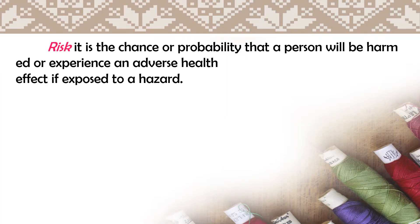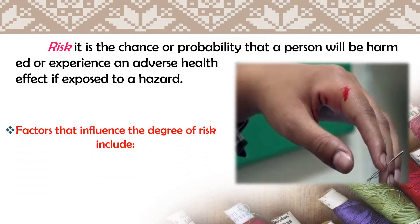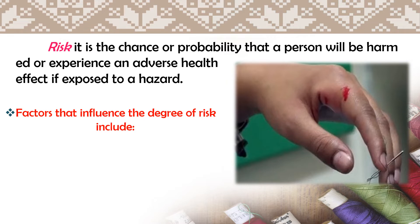Next is risk. When we say risk, it is the chance or probability that a person will be harmed or experience an adverse health effect if exposed to a hazard. Risk is what could possibly happen to us once we are exposed to a hazard. For example, pins are the hazard — once we are not careful in using or handling pins, we get injured. That injury is the risk, the effect once we are exposed to that hazard.